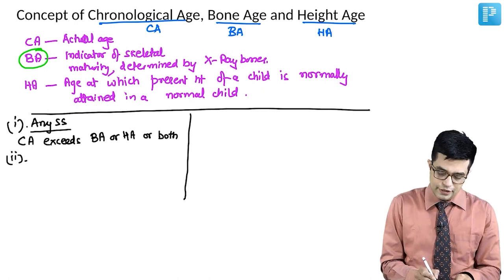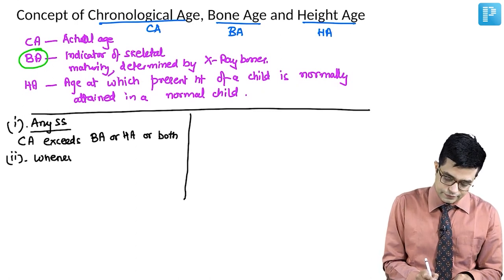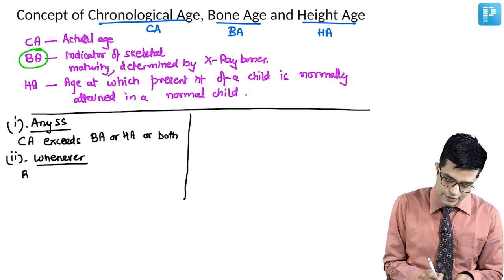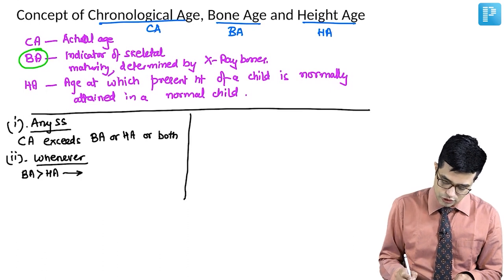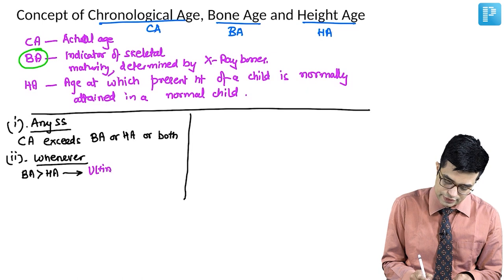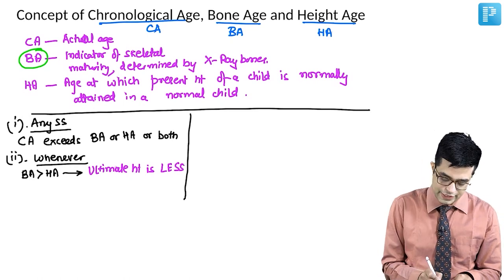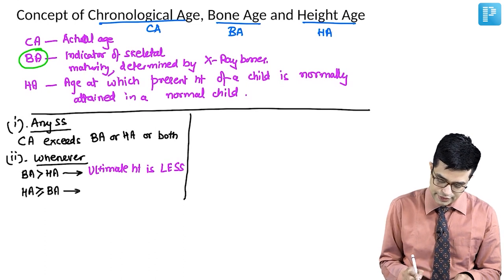Second: whenever bone age exceeds height age, the overall or ultimate adult height will be less. Whenever height age is equal to or more than bone age, the ultimate adult height will be better.